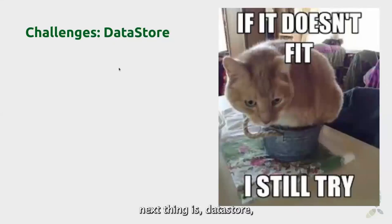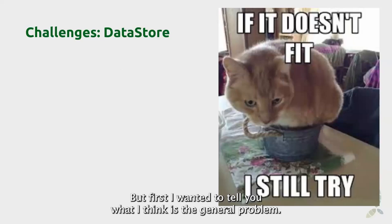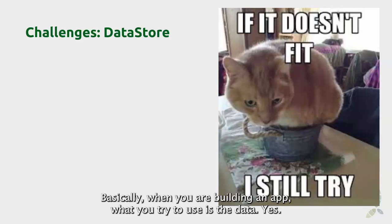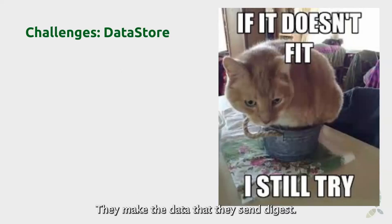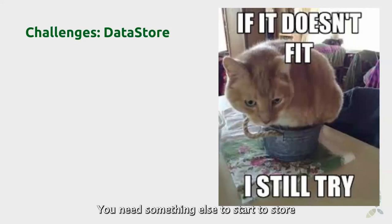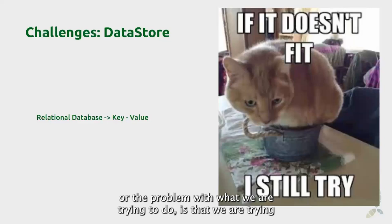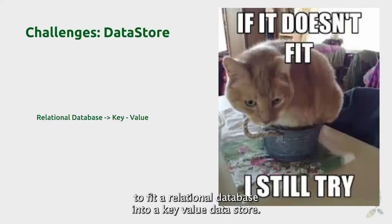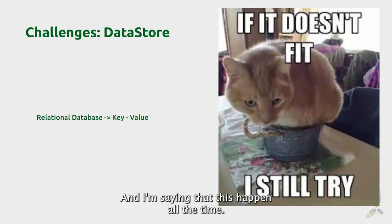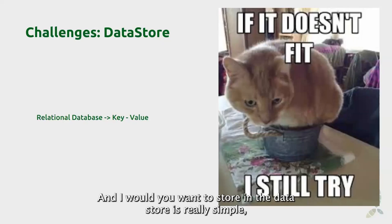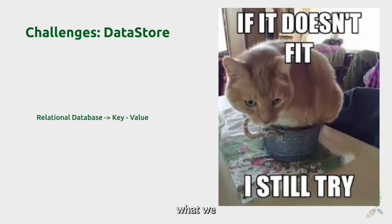The next challenge is the data store. When building an app, you try to use the DHIS data model — events, tracker, metadata. At a certain point you may need to store extra information that cannot fit into the DHIS data model, so you start using the data store. The problem is that we are trying to fit a relational database into a key-value data store, and sometimes this is too much — we squeeze a relational database into it, which generates some problems.